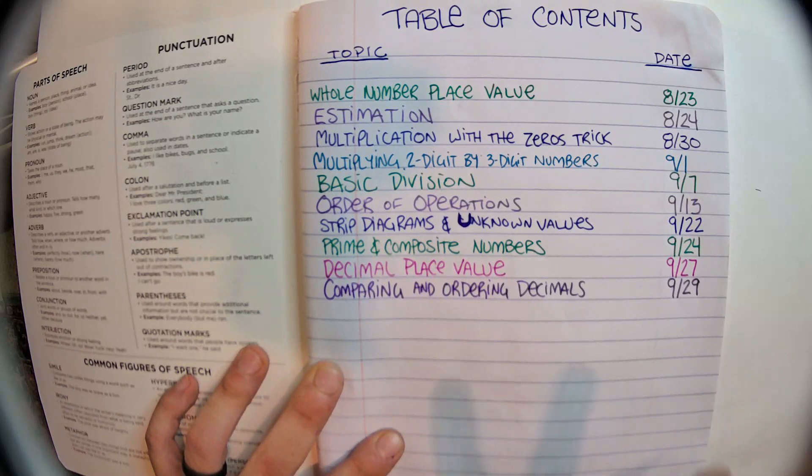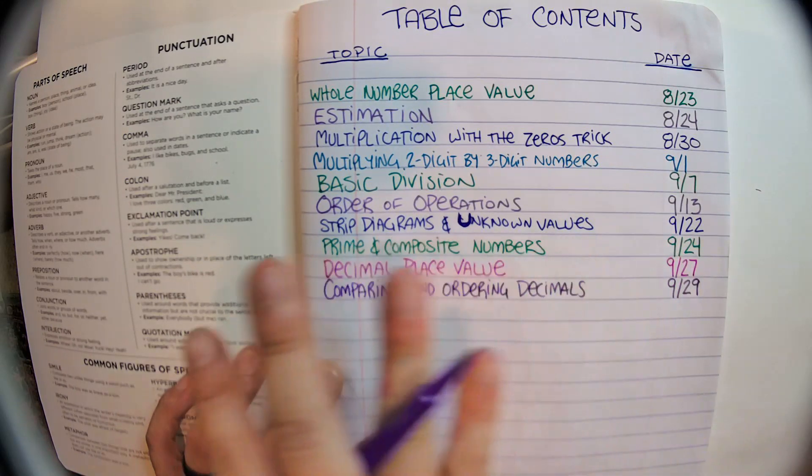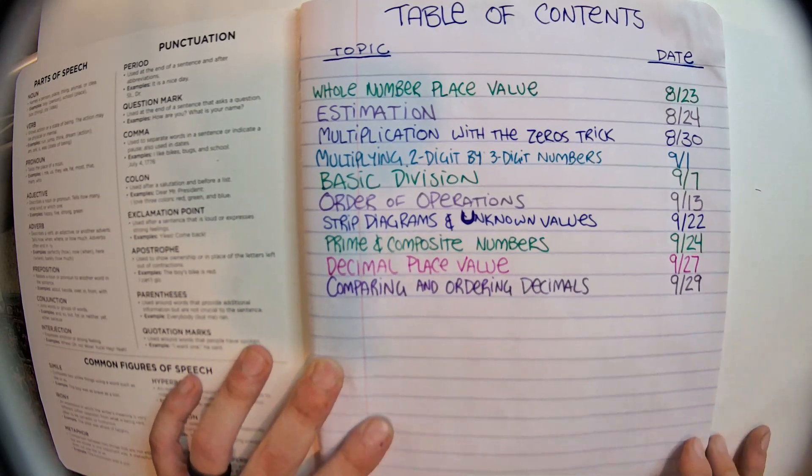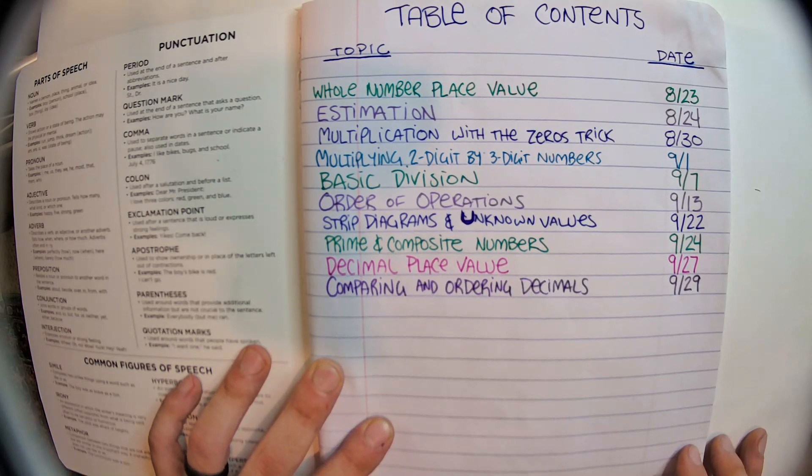Comparing is usually between two things, and then ordering is when you're putting a bunch of them in order from things like least to greatest or greatest to least.